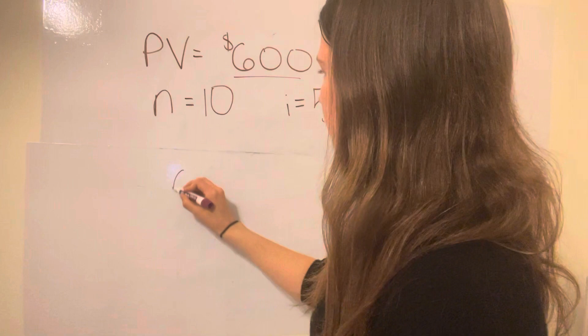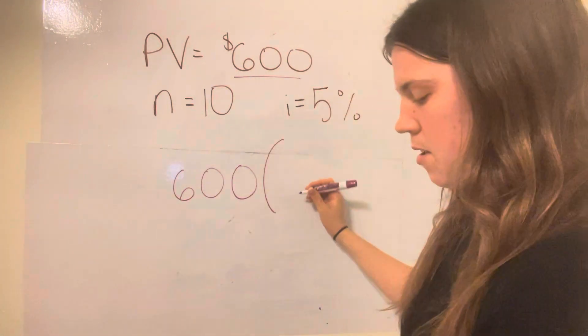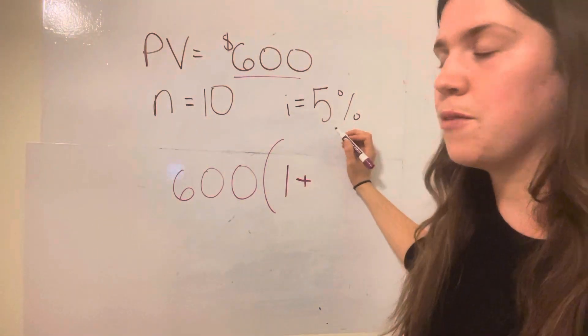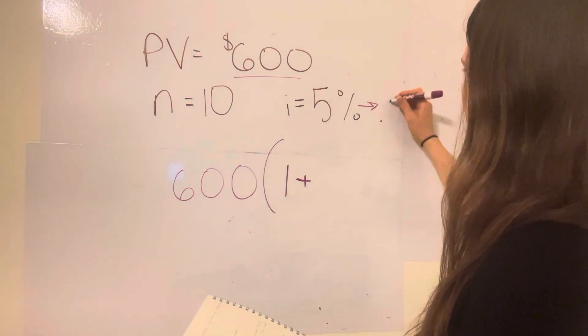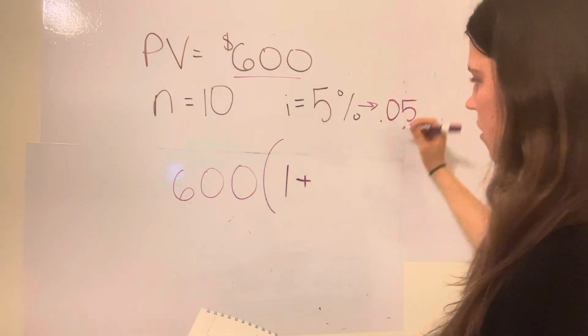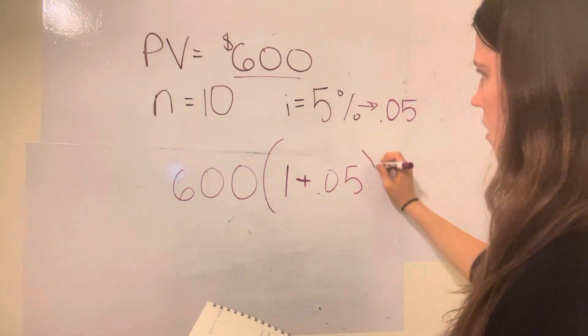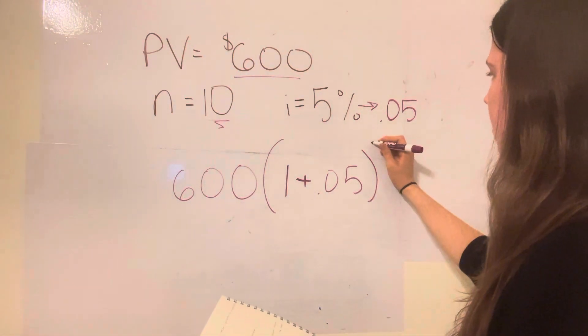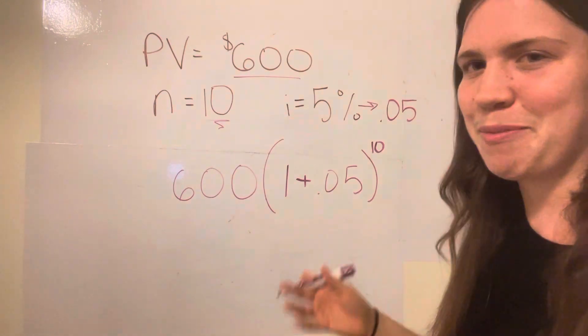So it's going to be 600 times 1 plus this in decimal form. So this is going to be 0.05, and then we're going to take our n, which is our years, and we're going to raise that to the 10th power.